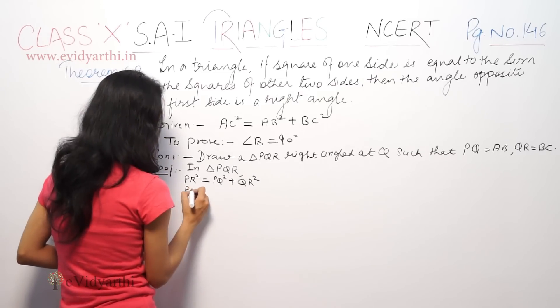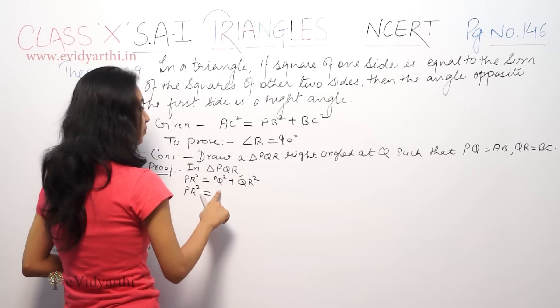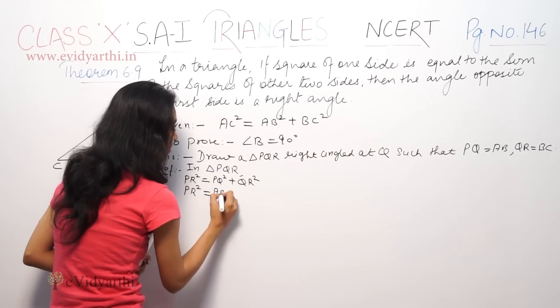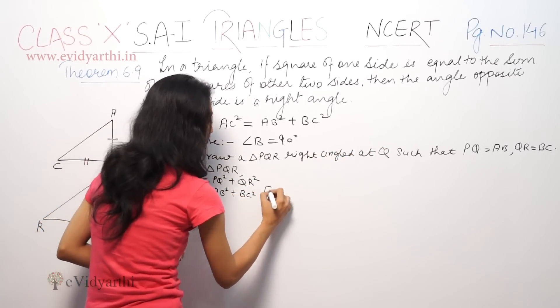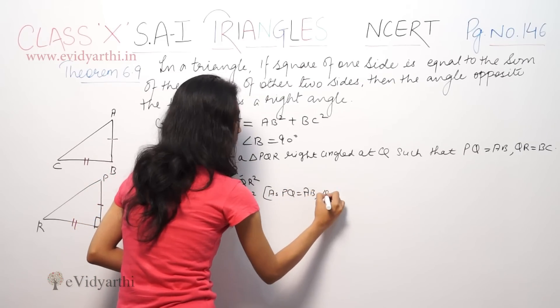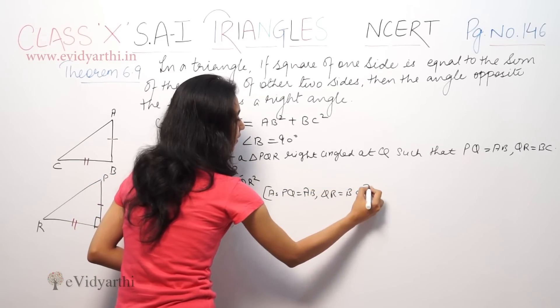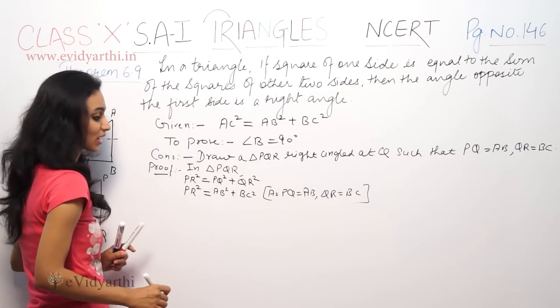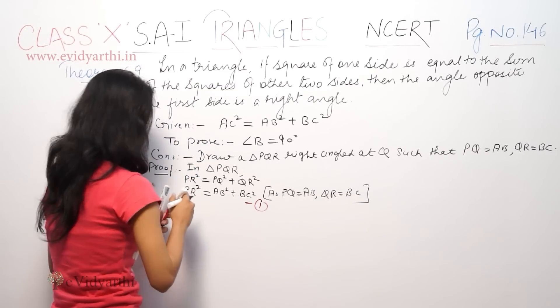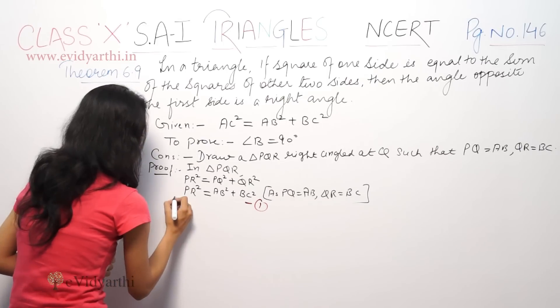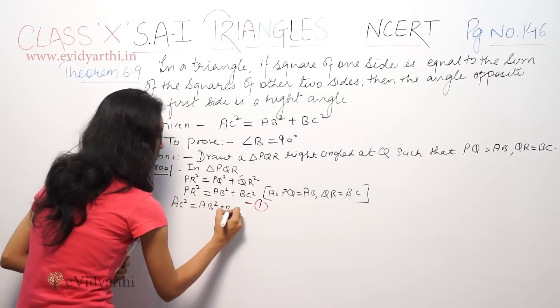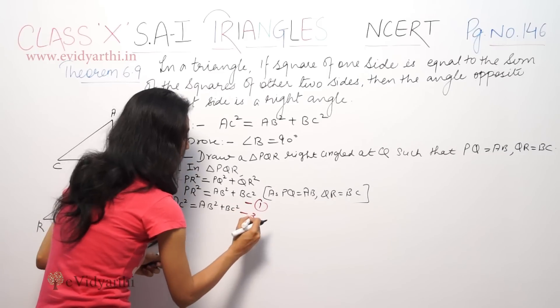Now, we know that PQ is equal to AB and QR is equal to BC. So, PR² = AB² plus BC² as PQ equal to AB, QR equal to BC. And one equation we have is that AC² is equal to AB² plus BC².